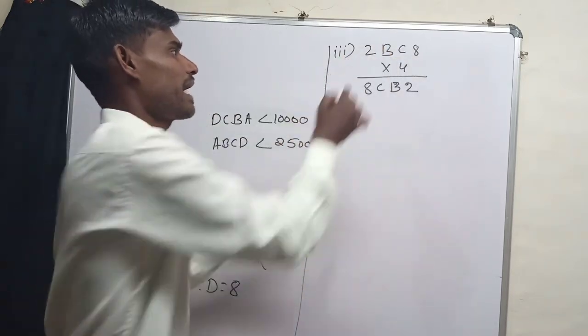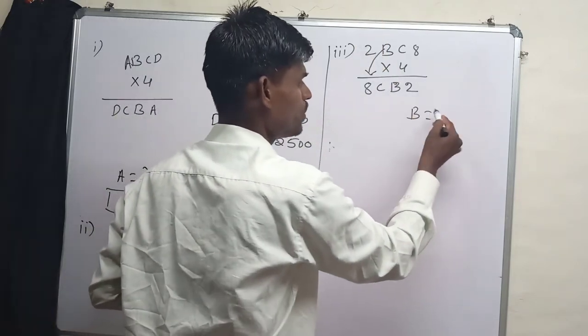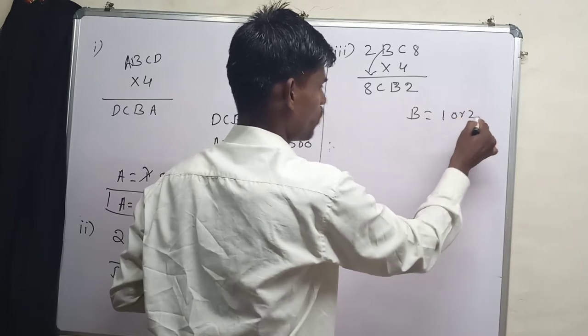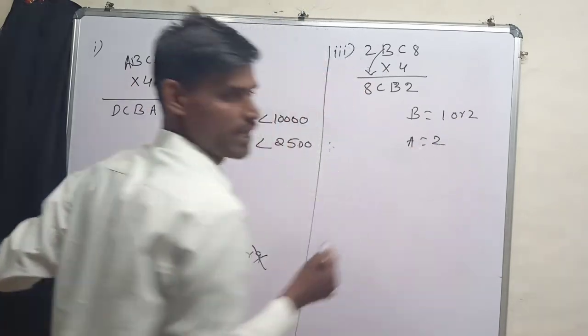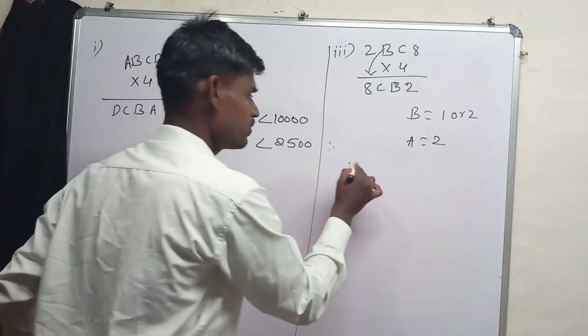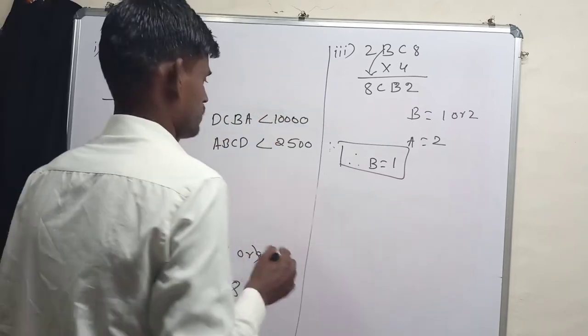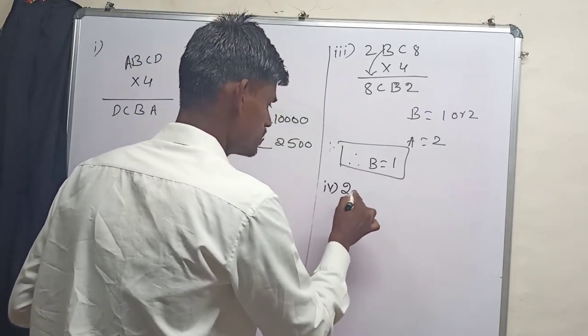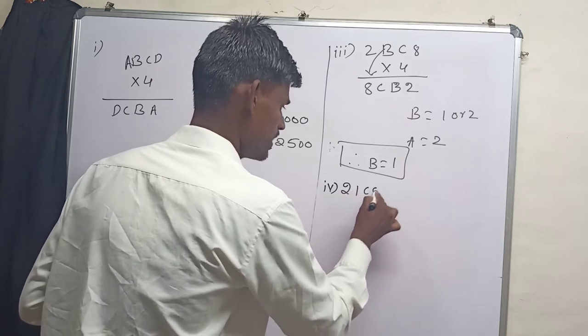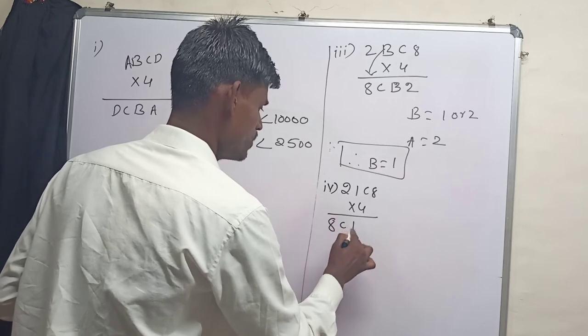Since we know that there is no carryover from here, B must be 1 or 2. But we already know that A is equals 2 here. Therefore, I am going to write B is equals 1. Now I am going to replace that B by 1. So we get 2 1C8 into 4 is equals 8C12.